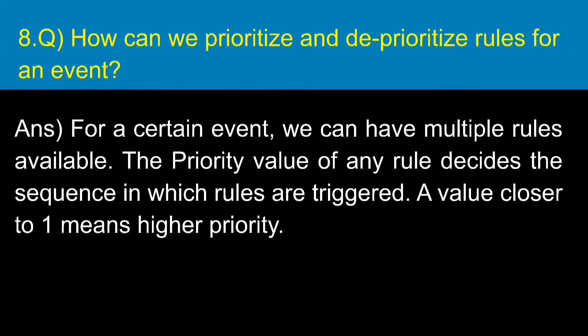How can we prioritize and deprioritize rules for an event? For a certain event, we can have multiple rules available. The priority value of any rule decides the sequence in which rules are triggered. A value closer to 1 means higher priority.